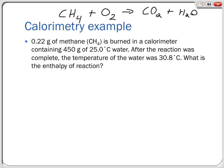Now we need to balance the equation. We have one carbon on each side already. We have four hydrogens in CH₄ and two in H₂O, so we place a coefficient of 2 in front of H₂O. That gives us two oxygens from H₂O and one from CO₂, totaling four oxygens on the right, so we put a 2 in front of O₂. The balanced equation is: CH₄ + 2O₂ → CO₂ + 2H₂O. This is the reaction we want ΔH° for, and to find it we need Q and moles of reaction.